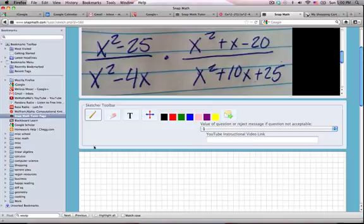So x squared minus 25 is going to factor into the square root of x squared, which is x, minus the square root of 25, which is 5, times the square root of x squared plus the square root of 25.